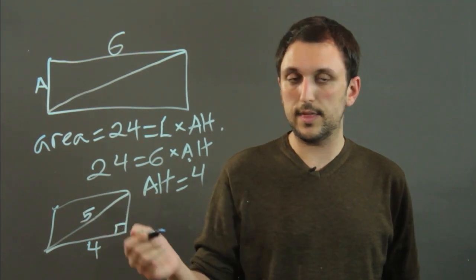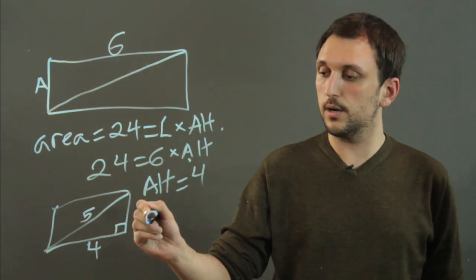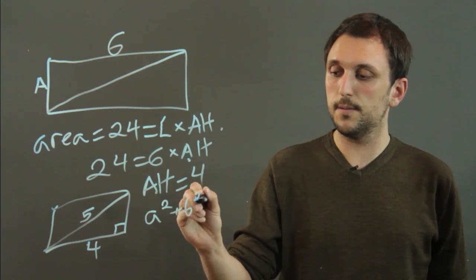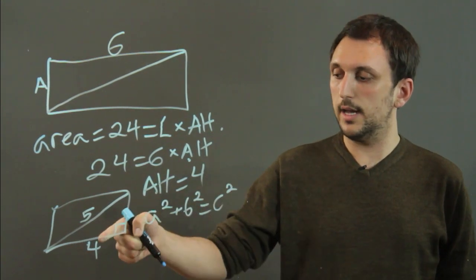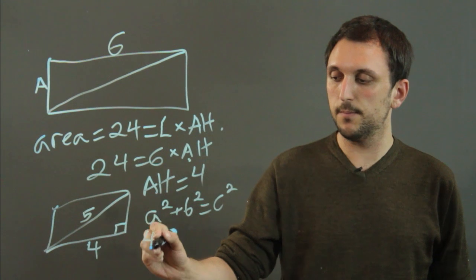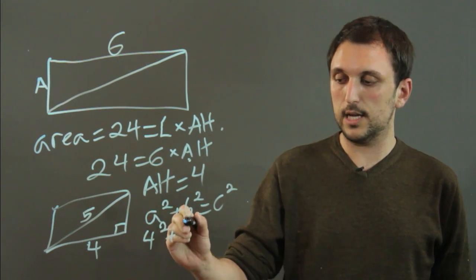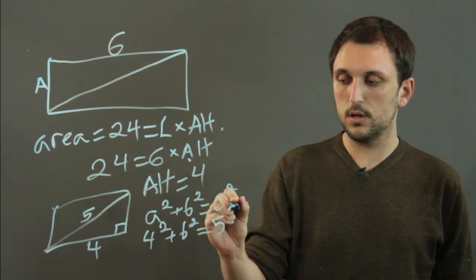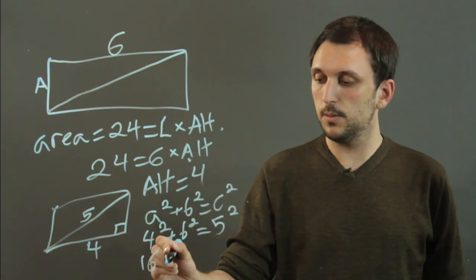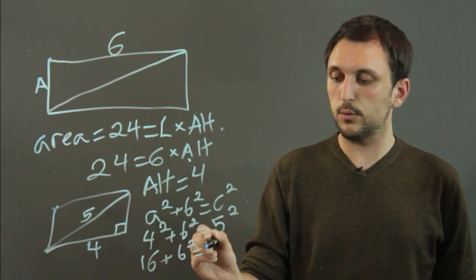then to find the altitude we can do the Pythagorean theorem which is A squared plus B squared equals C squared. And we have the 4, which is A. We don't know B, that's the altitude, and we know C is 5 squared. So we say 16 plus B squared equals 25.